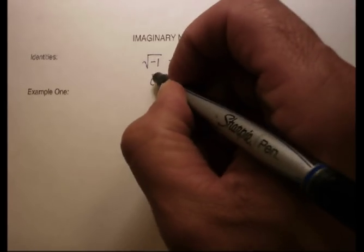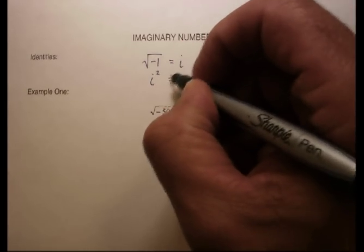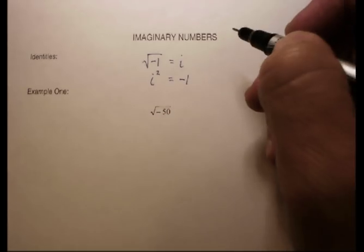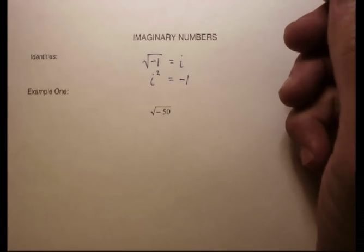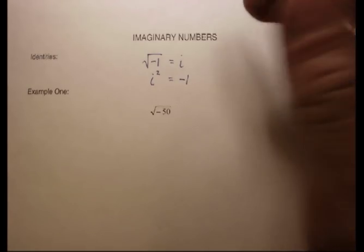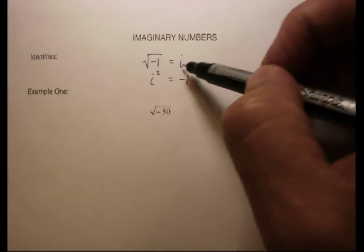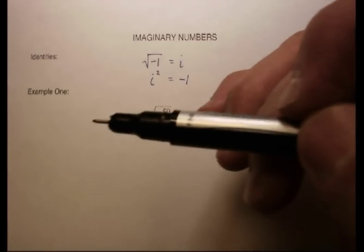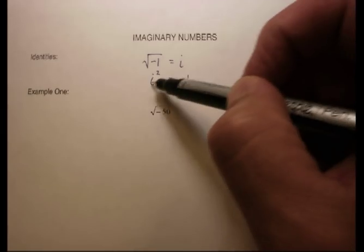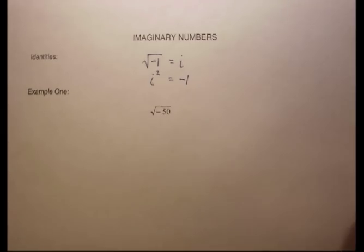The other identity that you need to remember is that i squared is going to be equal to negative 1. Now, that kind of flies in the face of what we're used to with real numbers, right? Whenever you square something, you should get a positive number. But again, we're going to just suspend our imagination, so to speak, and just accept that this equals negative 1.